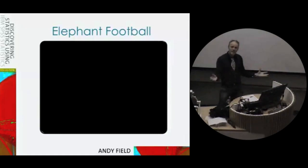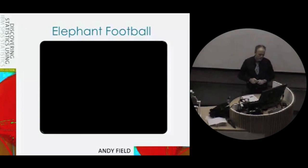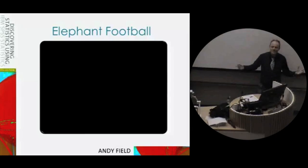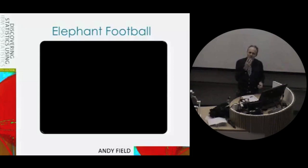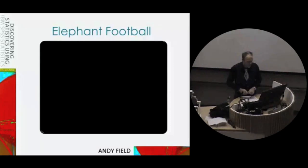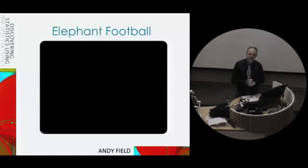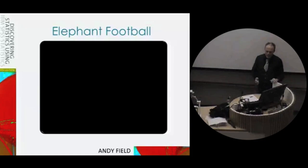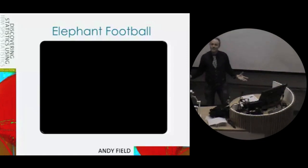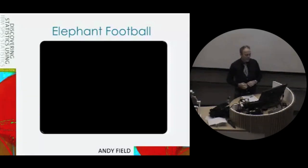Elephant football is quite a big deal, and there's massive rivalry between Asian and African elephants. African and Asian elephants are quite different — different size ears, slightly different appearance, from different continents. Just like in the human World Cup of football where there are great rivalries among different countries and continents, the same is true of elephant football. It all kicked off when the head of the Asian elephant football association claimed at a press conference that Asian elephants were better than African elephants at football.